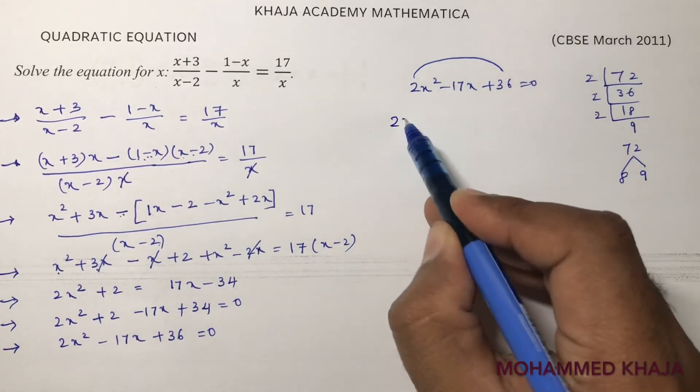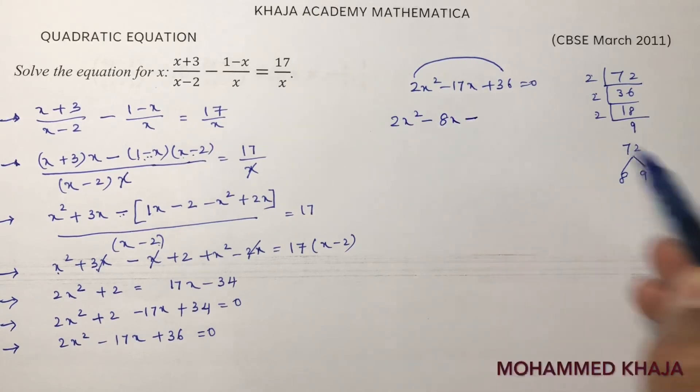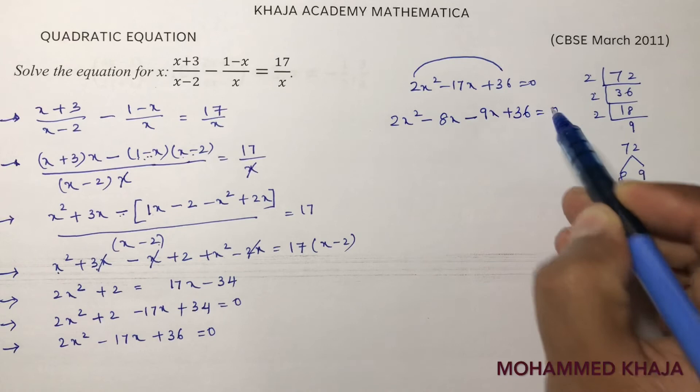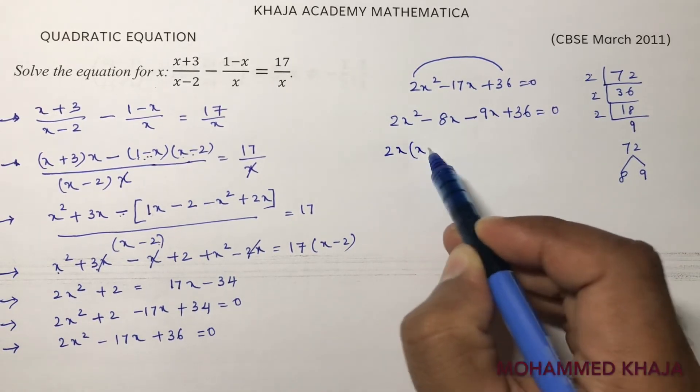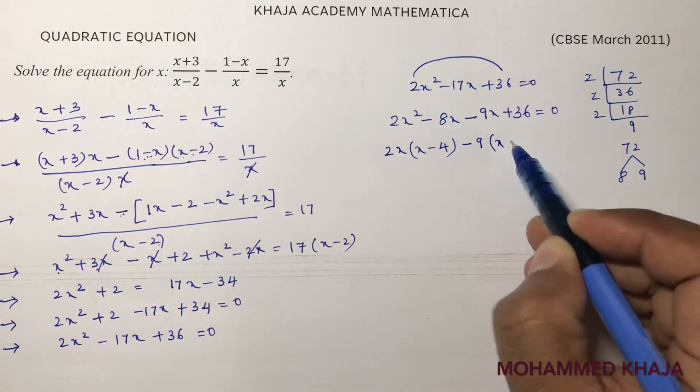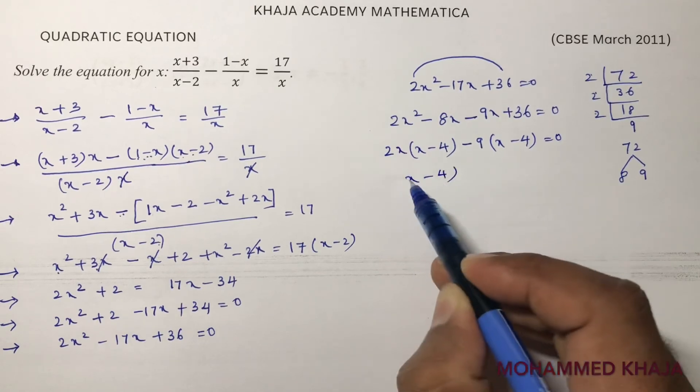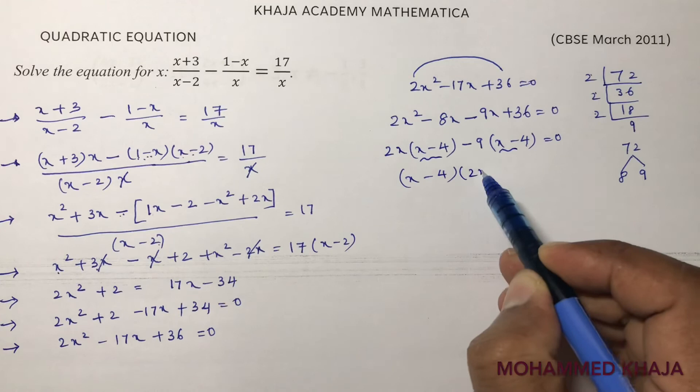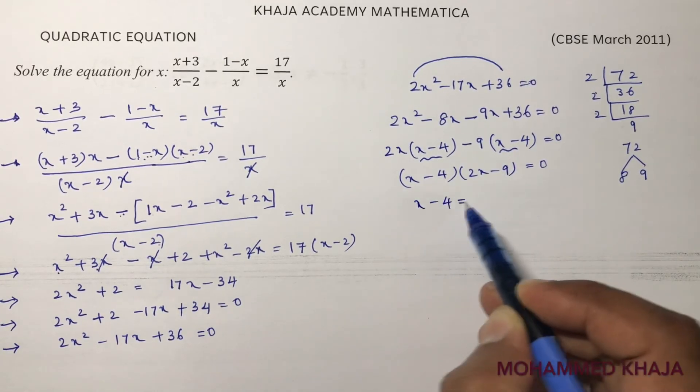So here 2x square minus 8x minus 9x plus 36 equals 0. In these two terms if you will take 2x common I will be left with x minus 4. Here minus 9 if you will take common x minus 4. So x minus 4 into 2x minus 9 equals 0.